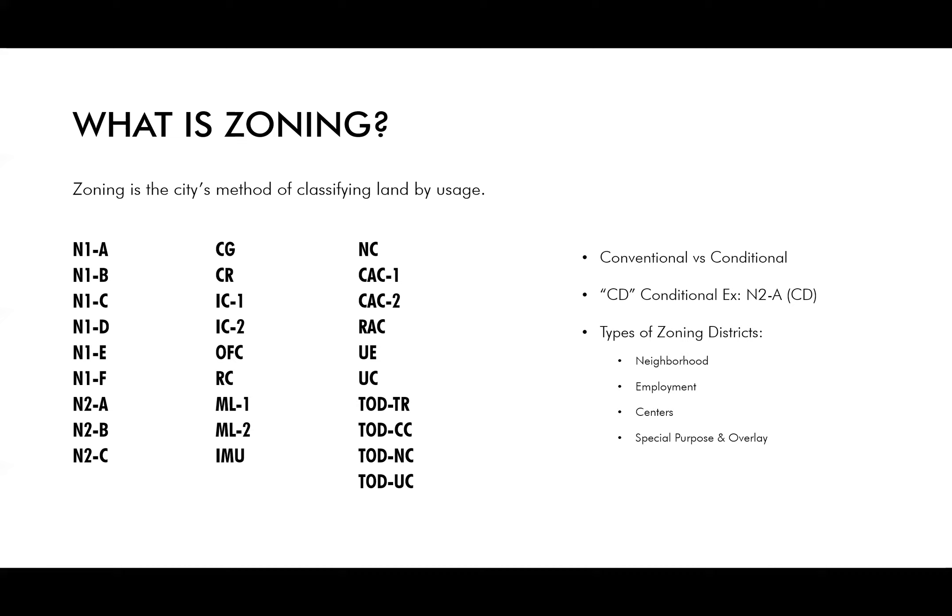You start with Neighborhood 1, which this petition is requesting to rezone from CG, General Commercial, to N1C. You also have zoning districts such as ML, Manufacturing and Logistics, or TOD, which is a transit-oriented development.